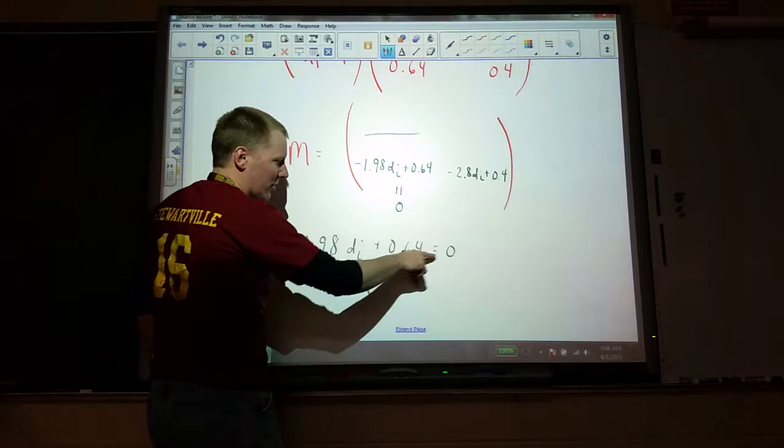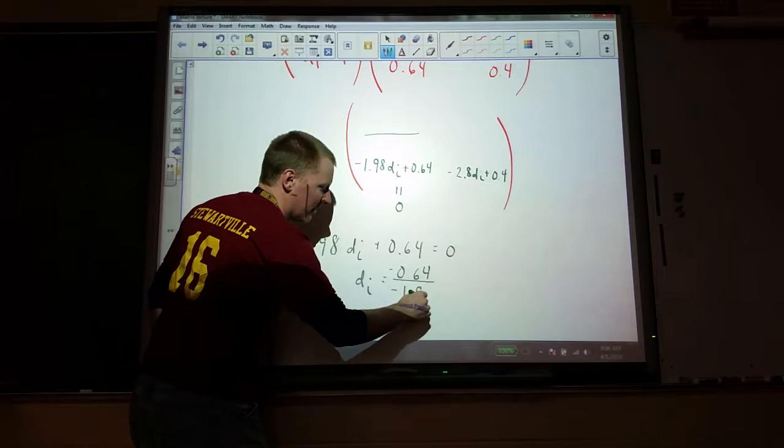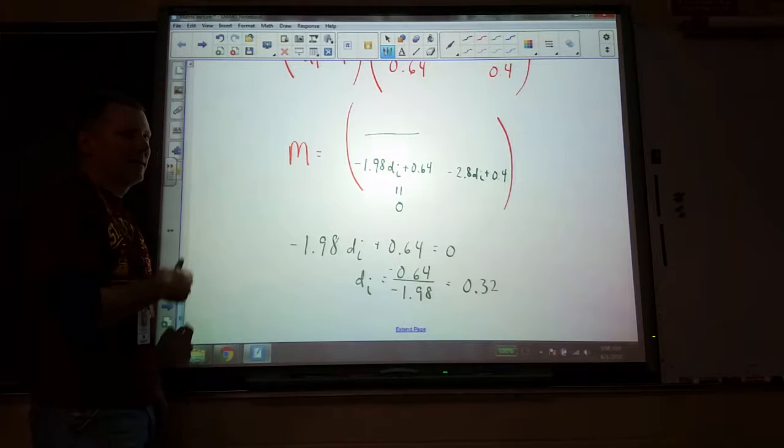DI, I'm going to subtract 0.64 from both sides, and then divide by, that's negative, and then divide by negative 1.98 to get just the DI. That's 0.32. 0.32, and this is an image distance.